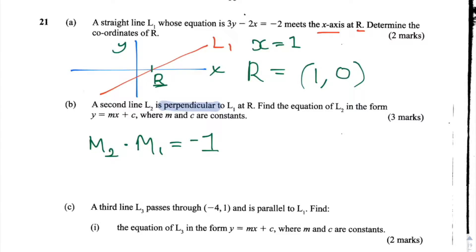So to answer this question we're first going to have to find out m1, and we do that using the equation for the line L1 which is 3y minus 2x equals minus 2. When we get the answer for m1 we're going to rearrange this equation to make m2 the subject and then solve for m2.